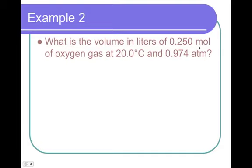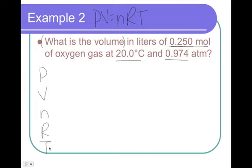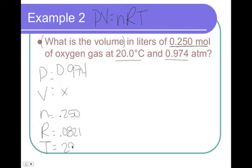Next example. I think I'm going to have to start a new video. Nope. I can probably fit it in. Okay. What is the volume in liters of 0.25 moles? Hey, there's moles again. So, that means I'm using PivNert. So, what is the volume of oxygen gas at 20 degrees Celsius and 0.974 atmospheres? So, PivNert, the pressure was 0.974, volume is X, N is 0.250, R is 0.0821, and temperature was 293.